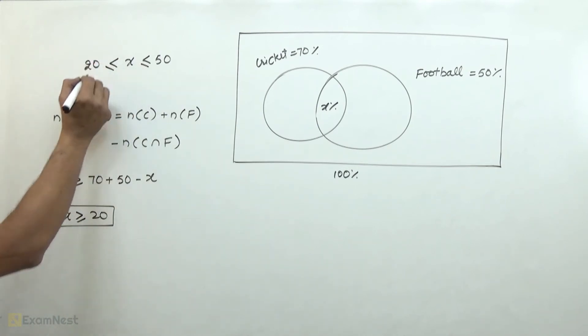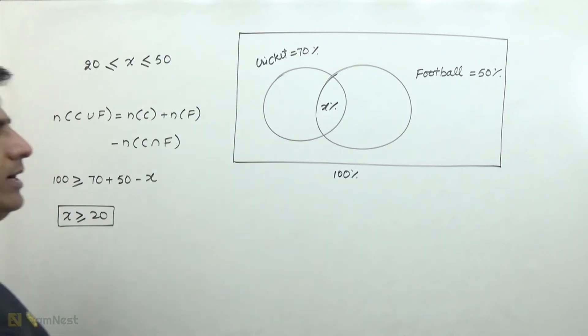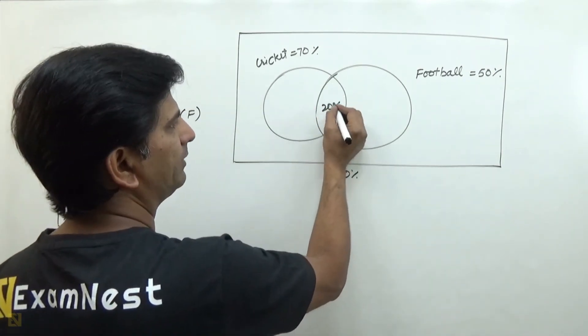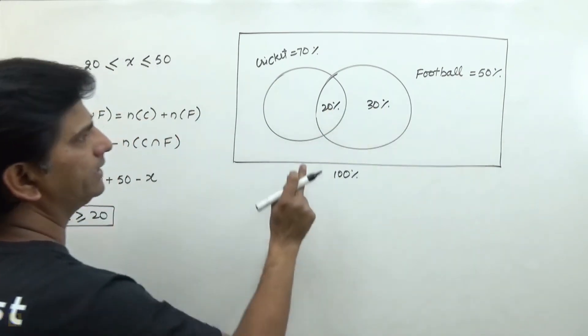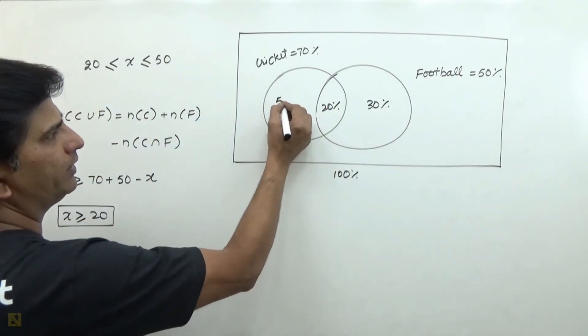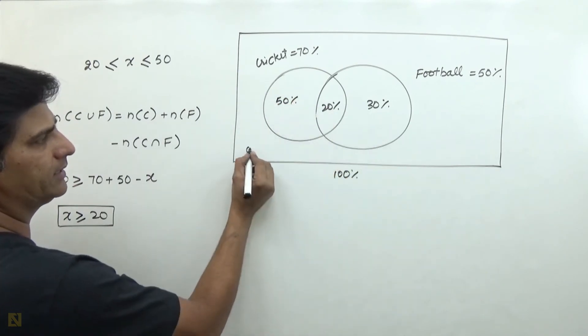If we write X equals 20, this will be 20%. This will be 50%, this will be 30%, which totals 100%.